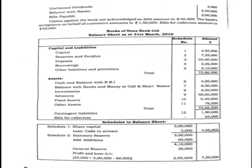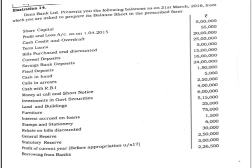Borrowings from the bank: 2 lakh 26,500. Unclaimed dividends: 4,000. Balance with banks: 2 lakh 50,000. Bills payable: 3 lakh. Claims against the bank not acknowledged as debt: 40,000. The bank's acceptance on behalf of customers: 1 lakh 50,000. Bills for collection: 65,000. Now let's see where these items appear — that is, under which note number each item has to be shown.